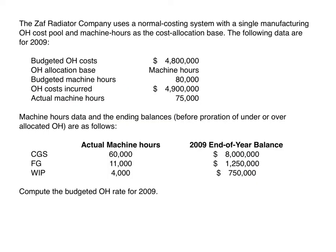Here we have the SAF Radio Company. They use a normal costing system — always be picking out these words and making sure you understand what they mean — with a single manufacturing overhead cost pool and machine hours as the allocation base. Machine hours is our cost driver, our cost allocation base.